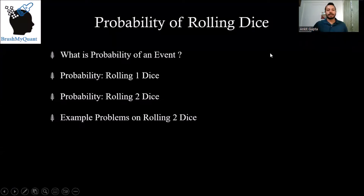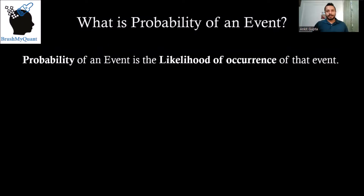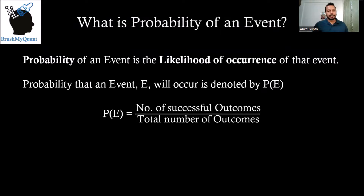So let's start with the definition of probability of an event. Probability of an event is nothing but the likelihood of occurrence of that event. If you're talking about an event E, then probability of occurrence of event E is denoted by P(E) and it is equal to number of successful outcomes divided by total number of outcomes.